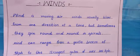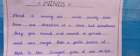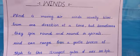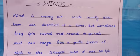Wind is moving air. Usually winds blow from one direction at a time, but sometimes they spin round and round in spirals. Winds can range from a gentle breeze of 5 kilometers per hour to the strongest gales of over 200 kilometers per hour.